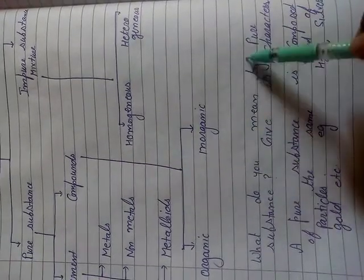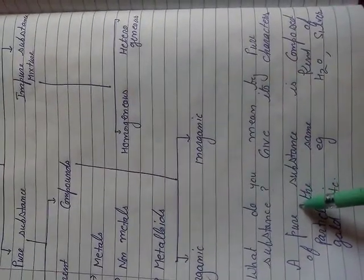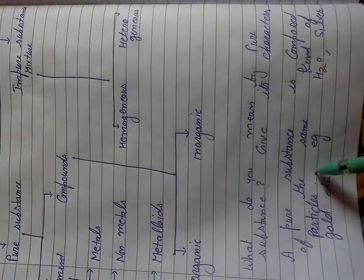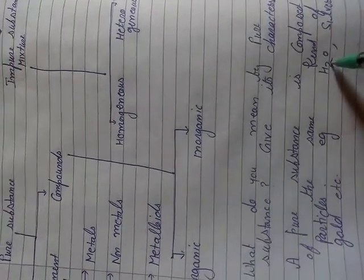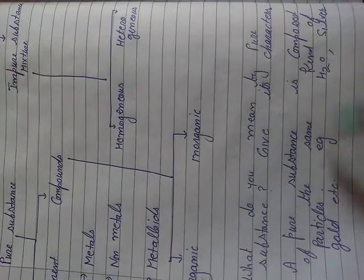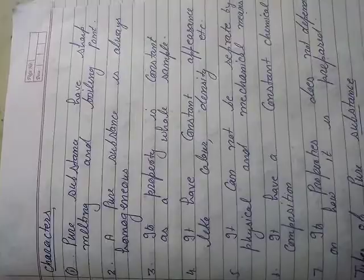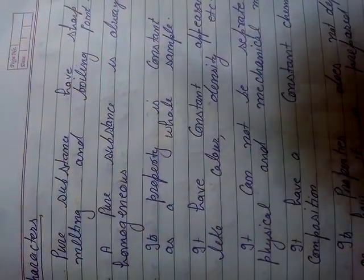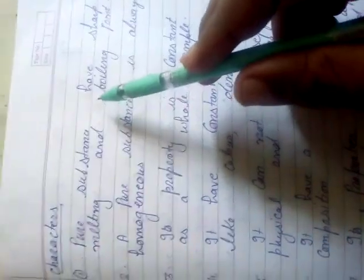Now the question arises: what do we mean by pure substances? What are their properties? A pure substance is composed of only one kind of particle. The first character of pure substances is that they have a sharp melting and boiling point — it means they have a fixed melting and boiling point.